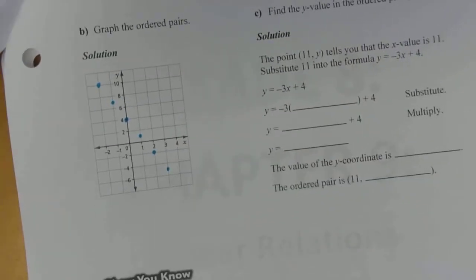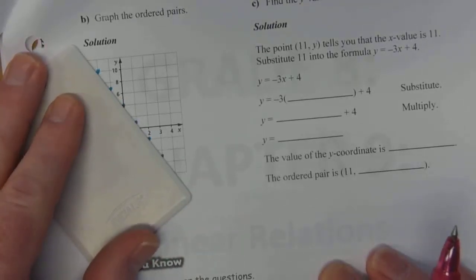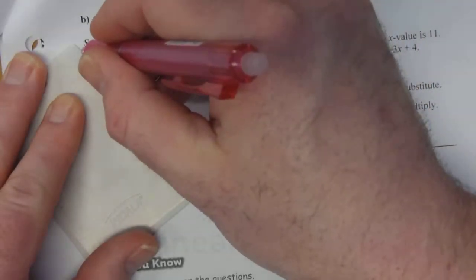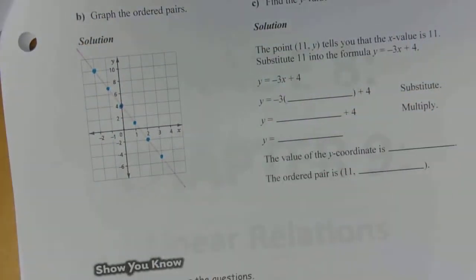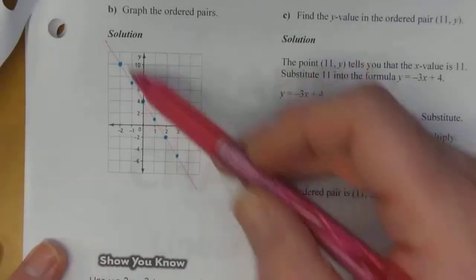And as you can see, once again that is forming a straight line. And I'm just going to draw that straight line all the way through. Just so that we can see that. So there is our graph with the ordered pairs.